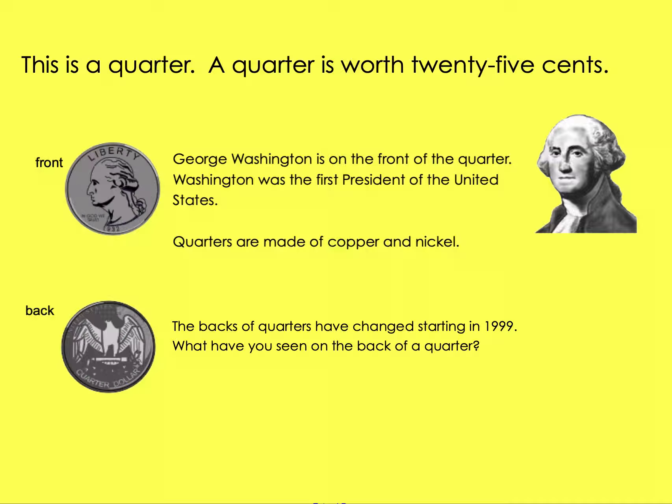This is a quarter. A quarter is worth twenty-five cents. Here is the front of our quarter. George Washington is on the front of the quarter. He was the first president of the United States. Here is the back of a quarter. You can see an eagle. On some quarters, you might see all different pictures for each of the fifty states.